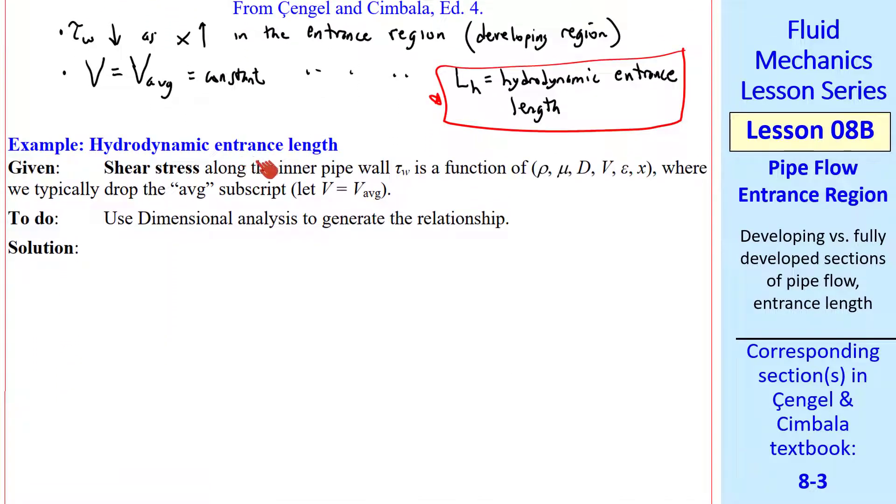Let's do some analysis. In this entrance region the shear stress along the pipe wall is a function of rho, mu, d, V, epsilon, and x, where we have dropped the average subscript as we have done previously. V is the average speed through the pipe.